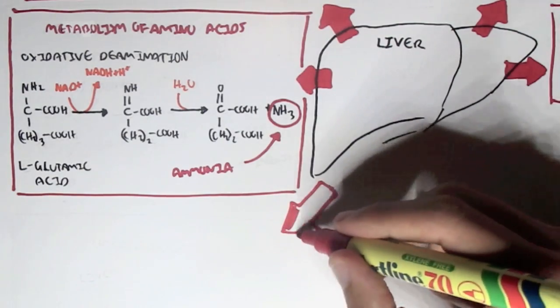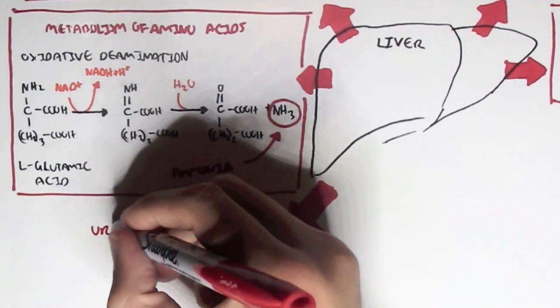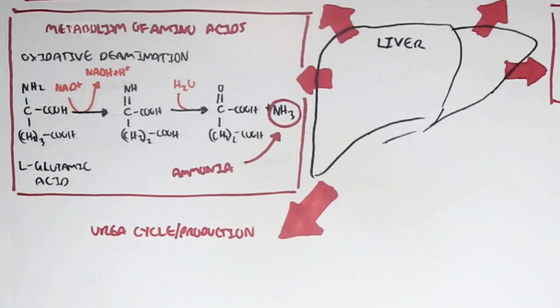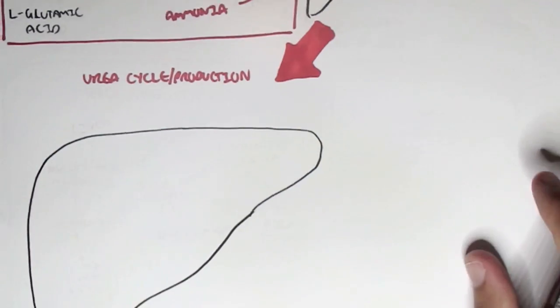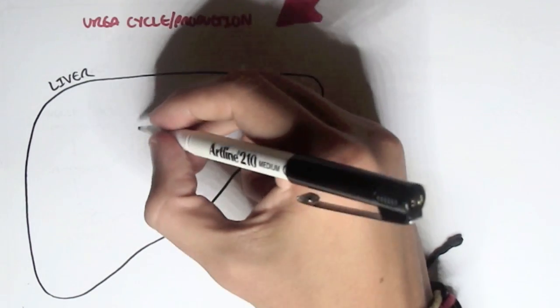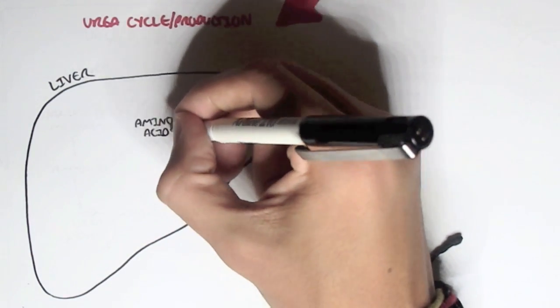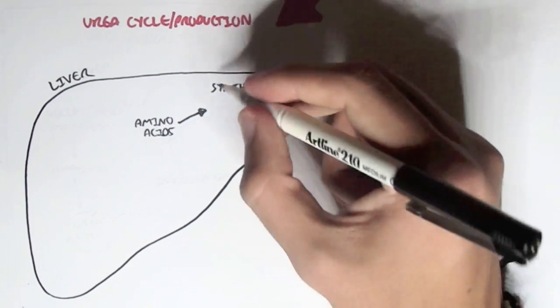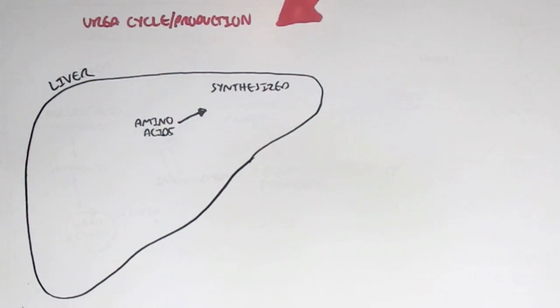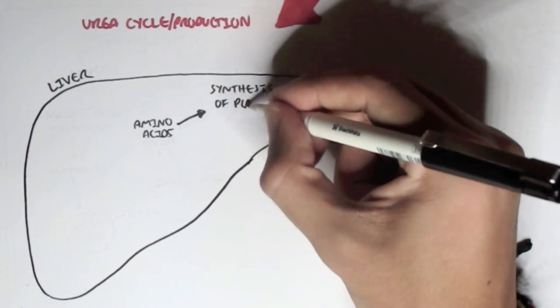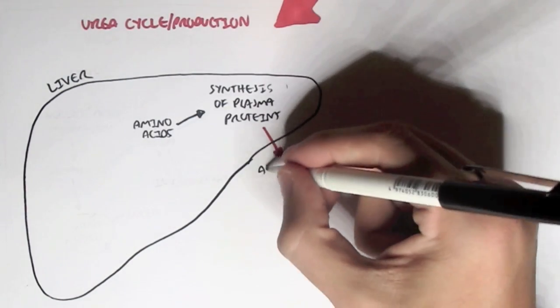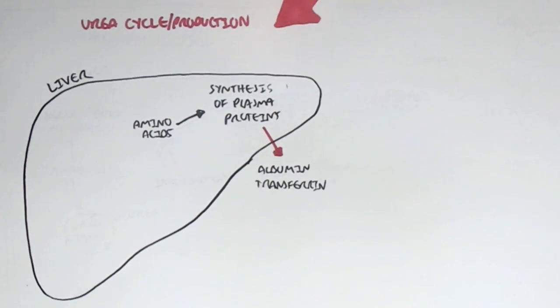Now, we can go back to another function the liver does, the production of urea. So, the liver produces urea. Let's just draw the liver here. Just recapping, we know that amino acids can be made into proteins, can synthesize proteins. It can synthesize plasma proteins, plasma proteins such as transferrin and insulin-like growth factor carrier protein, which are both carrier proteins. They carry proteins from A to B around the body.